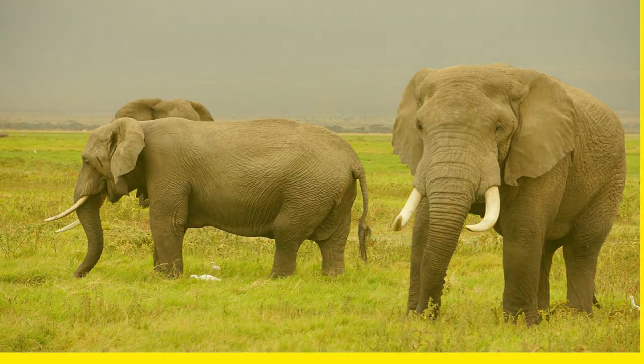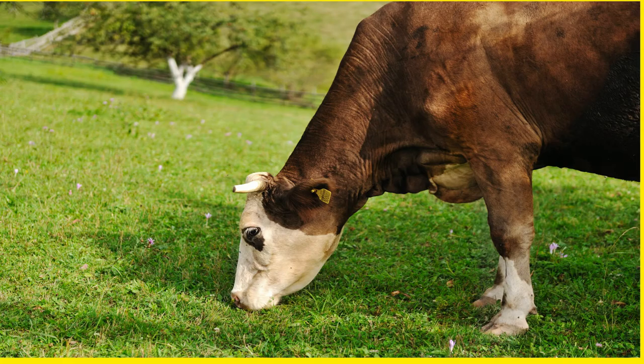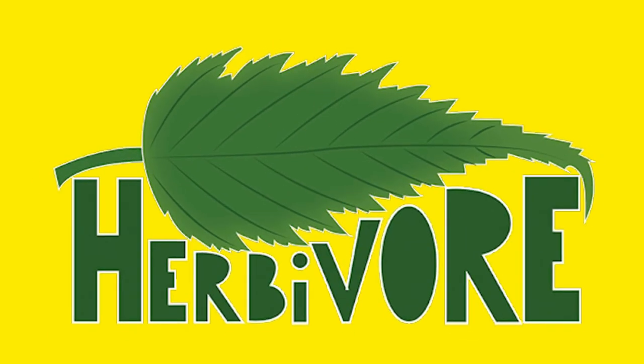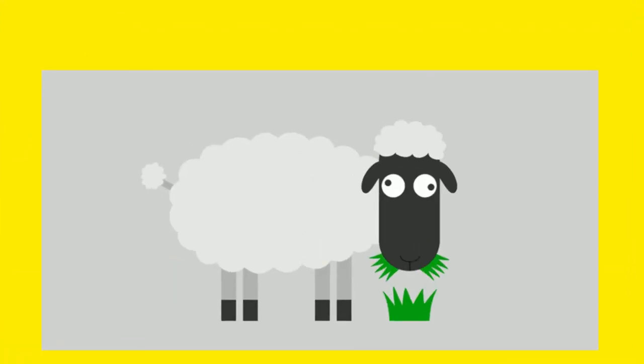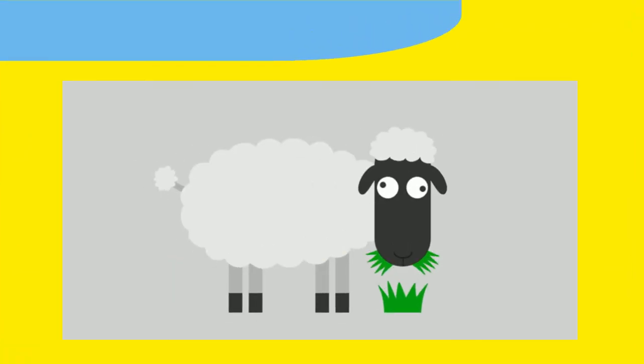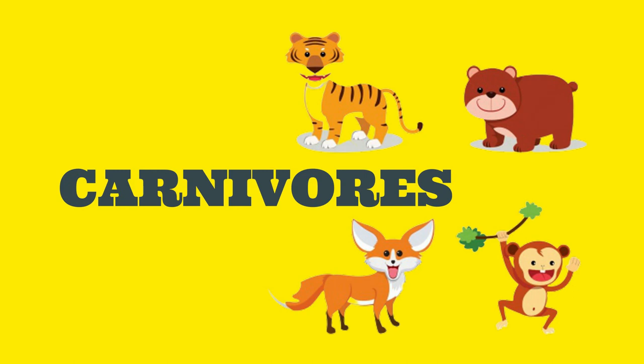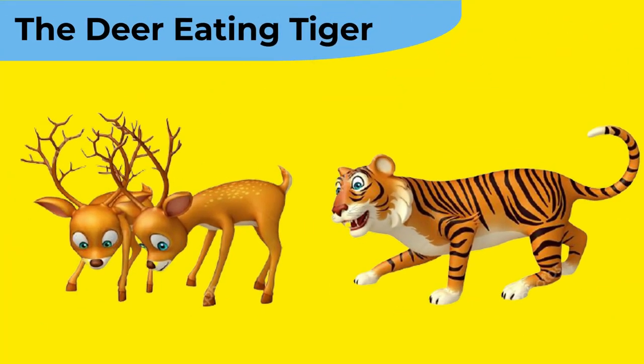some animals' food is plants, and they are known as herbivores. For example, the grass-eating sheep. Some of them eat other animals and are called carnivores. For example, the deer-eating tiger.